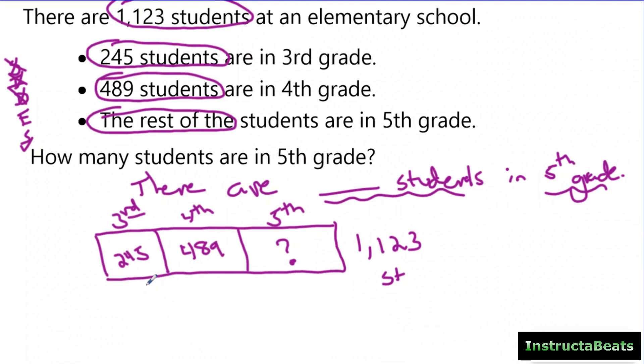Now, even if they don't know how to add or subtract correctly, they know what they need to do. They need to find out what they have. They need to add this part together, and they're going to get 734.